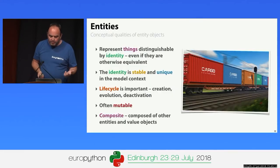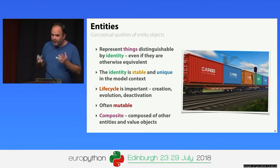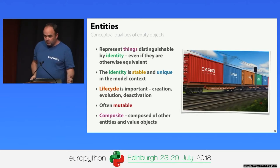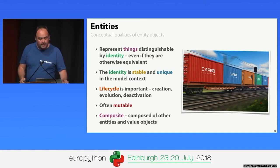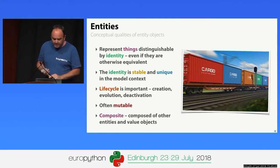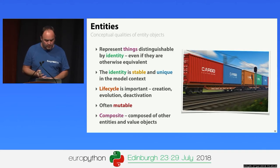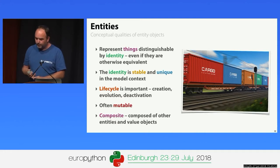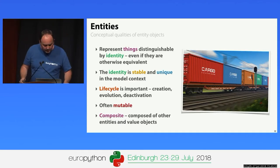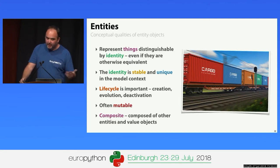Entity objects are the next level of sophistication. Entities represent things that are distinguishable by identity — even if two are completely equivalent in value, the fact that one is a different instance is important. The identity needs to be stable over time; an entity cannot change its identity. It needs to be unique within its bounded context. For entities, lifecycle is important: when the entity is created, how it evolves over time, and if it is deleted or deactivated. Entities are more often mutable, and they tend to be composite — made of other entities and value objects.